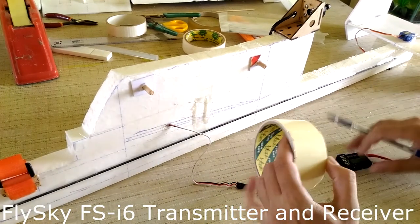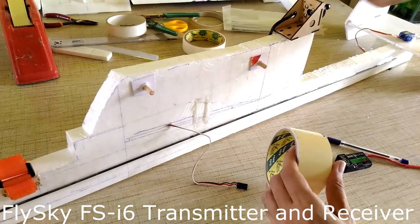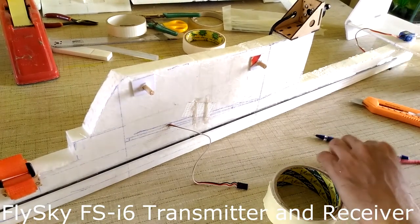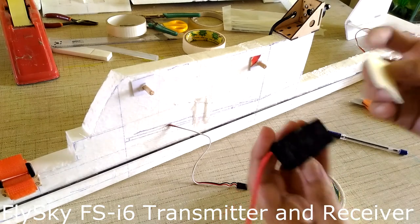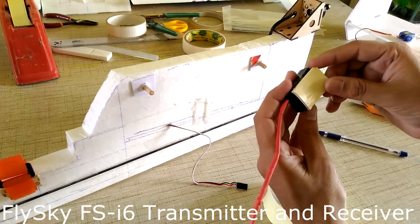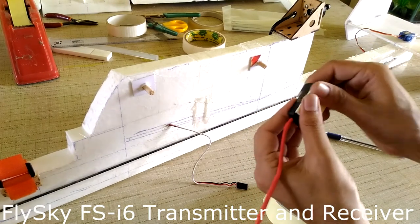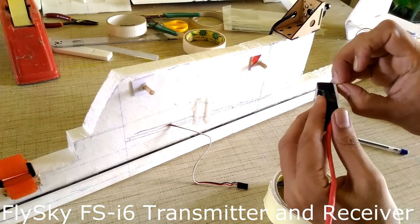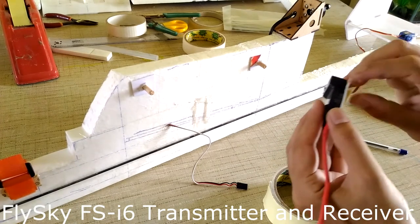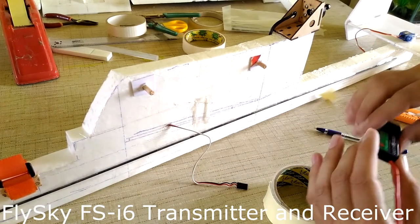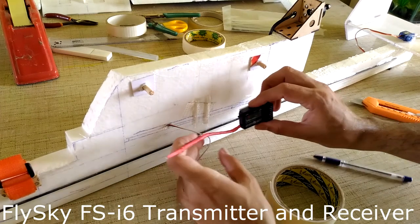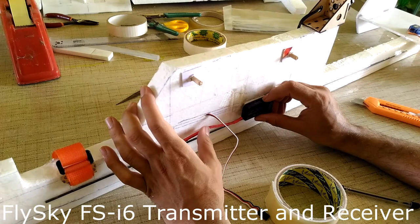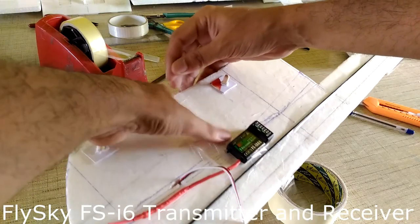Now for fitting the receiver I am using this double sided foam tape, cutting it to exact size, sticking it on the receiver, and now fixing it on decided position and taping it with seller tape.